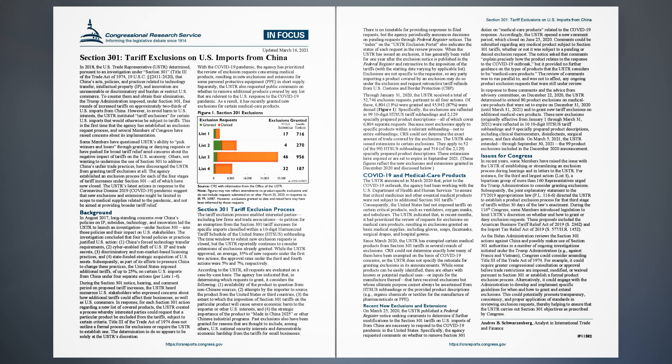Background. In August 2017, long-standing concerns over China's policies on IP, subsidies, technology, and innovation led the USTR to launch an investigation under Section 301 into those policies and their impact on U.S. stakeholders. The investigation concluded that four broad policies or practices justified U.S. action: 1. China's forced technology transfer requirements; 2. Cyber-enabled theft of U.S. IP and trade secrets; 3. Discriminatory and non-market-based licensing practices; and 4. State-funded strategic acquisition of U.S. assets.